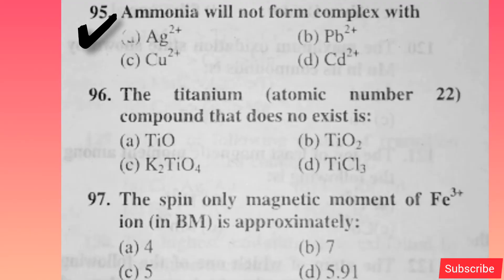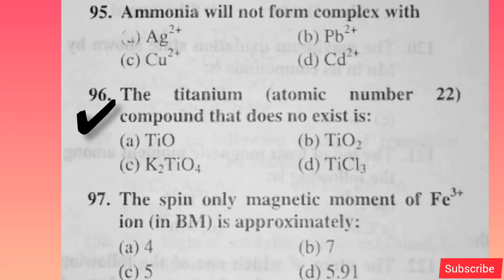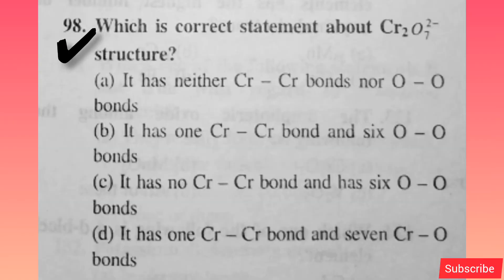Ammonia will not form a complex with — option A is correct. The titanium (atomic number 22) compound that does not exist is — option C is correct. The spin-only magnetic moment of Fe3+ ion in BM is approximately — option D is correct. Which is the correct statement about Cr2O7²⁻ structure? Option A is correct.